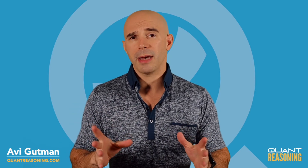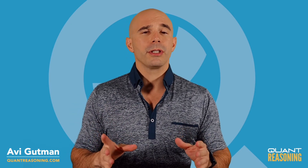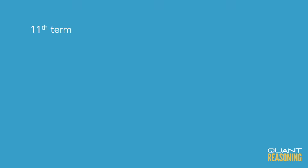Just as an example, if we're talking about the 11th term, that would be equal to 11 plus 2 to the power of 10. So it's always 2 to the power of 1 below the position of that term in the sequence.